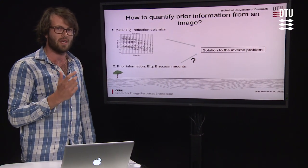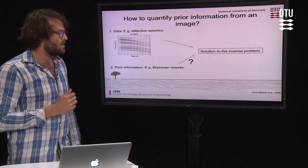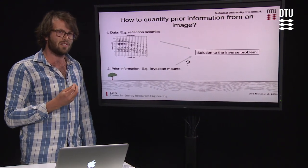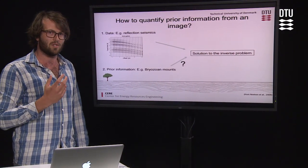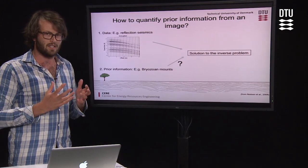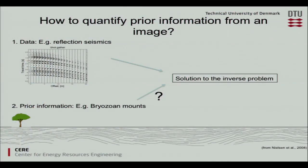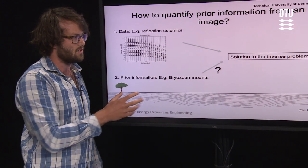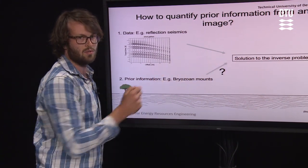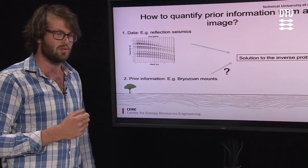And then secondly, we have what we call a priori information, which is some expectation we have to the inverse problem independently from the data. And if we can quantify these two types of information, we can combine them to obtain the solution to the inverse problem.